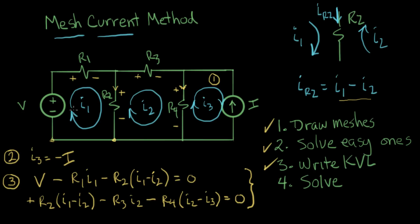One thing to remind ourselves: when we define these mesh currents, all of them went in the same direction — all clockwise in this case. That's so that when you have this little pattern of I1 minus I2, or I2 minus I3, it becomes a familiar pattern and it helps to get the signs right. The reason we're using meshes — the open areas of the circuit — and not any other loop, is because it produces exactly the right number of equations to solve the circuit. You don't have too few equations, and you don't have too many equations.